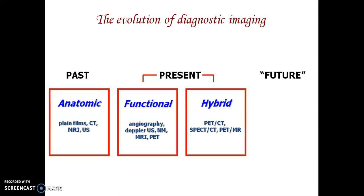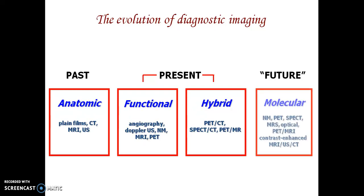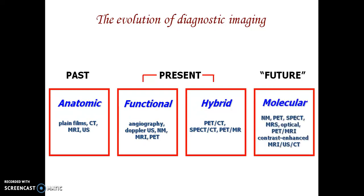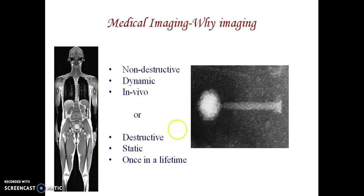Evaluation of diagnostic images: anatomic images include MRI and CT images; functional images include Doppler scan, MRI, PET scan, and angiography images. Hybrid images combine PET with CT, SPECT with CT, and PET with MRI. Molecular images include NM-PET, SPECT, MS optical images, contrast-enhanced MRI, ultrasound, and CT images.